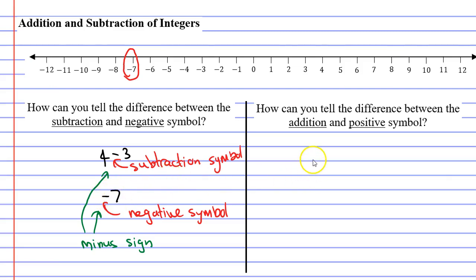Let's move on to the next question, which says how can you tell the difference between the addition and positive symbol? So we'll go with the example 4 plus 3. And in this particular case, this symbol is referred to as the addition symbol.